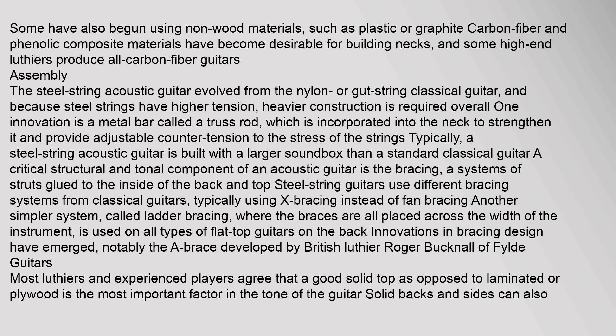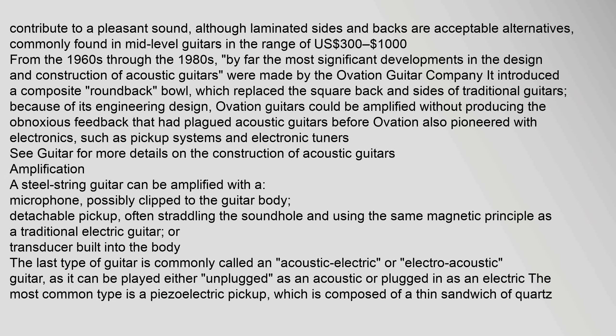Another simpler system called ladder bracing, where the braces are all placed across the width of the instrument, is used on all types of flat top guitars on the back. Innovations in bracing design have emerged, notably the A brace developed by British luthier Roger Bucknall of Fylde guitars. Most luthiers and experienced players agree that a good solid top, as opposed to laminated or plywood, is the most important factor in the tone of the guitar. Solid backs and sides can also contribute to a pleasant sound, although laminated sides and backs are acceptable alternatives, commonly found in mid-level guitars in the range of $300 to $1,000. By far the most significant developments in design and construction were made by the Ovation Guitar Company, which introduced a composite round-back bowl and pioneered electronics such as pickup systems and electronic tuners.